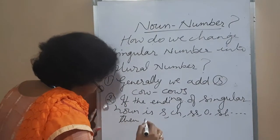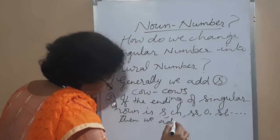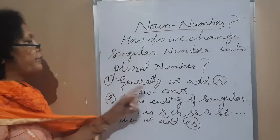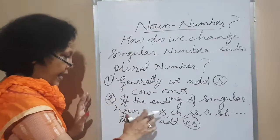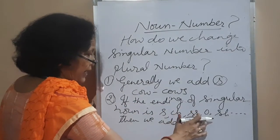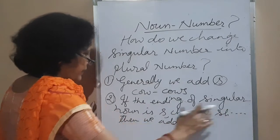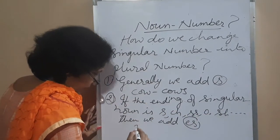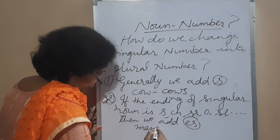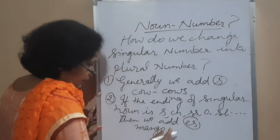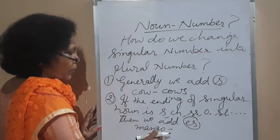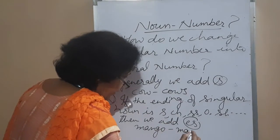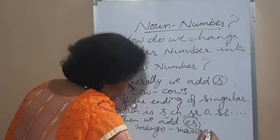Second rule: if the ending of a singular noun is S, CH, double S, or O, then we add ES. For example, mango — the last ending letter is O, so we add ES to get mangoes.